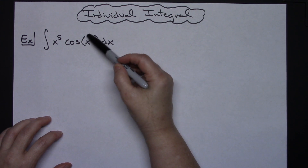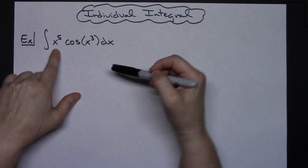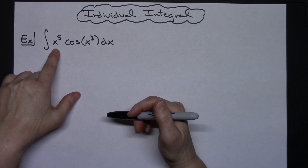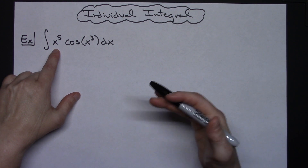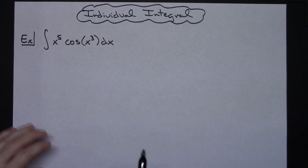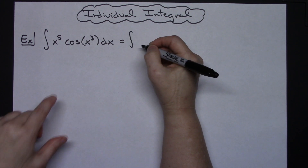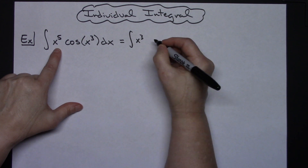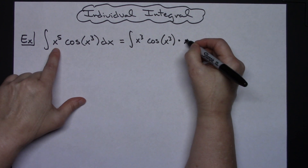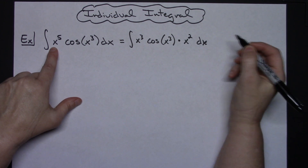Looking at the inside function, I've got an x to the third, and if I break this up into x to the third and x to the squared, and let u be x to the third, that's going to take care of substituting for x to the third, and once I take the derivative and do the substitution for dx, it's going to let the x squareds fall out. So the first step is to rewrite this as the integral of x to the third, cosine x to the third, times x squared dx — those two factors are equivalent to x to the fifth.